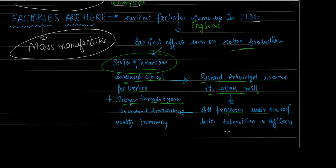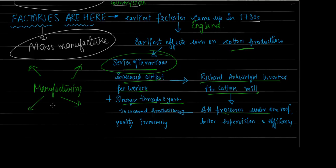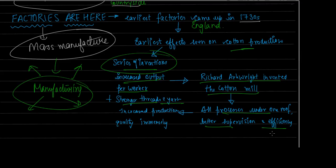In the cotton mill, stapling, cleaning, filtering, weaving, and spinning all happened under one roof. Previously the manufacturing process was scattered - some work in the countryside, some in towns, some in rural areas - and then everything had to be assembled at a central location. But when Richard Arkwright created the cotton mill concept, all processes came under one roof. This led to better supervision and efficiency, improved quality of products, and the idea of mass manufacture spread widely.